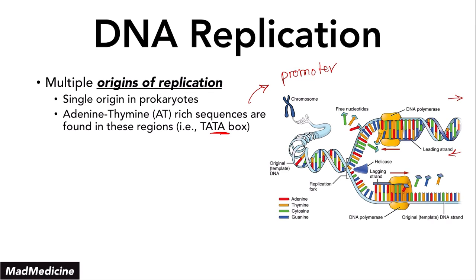The promoter region will not be directly close to the origin of replication in terms of the actual DNA sequence — it might be hundreds or thousands of base pairs away. But remember that DNA is not just linear; it is also coiled. In 3D, a promoter sequence far away in base pairs might be physically touching the origin of replication, and can therefore still influence it.